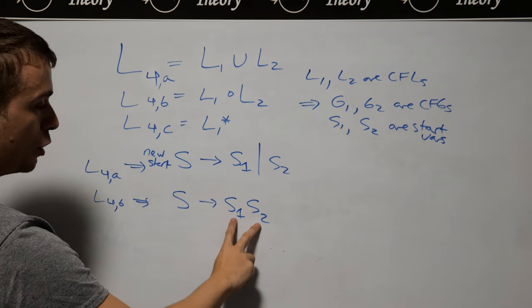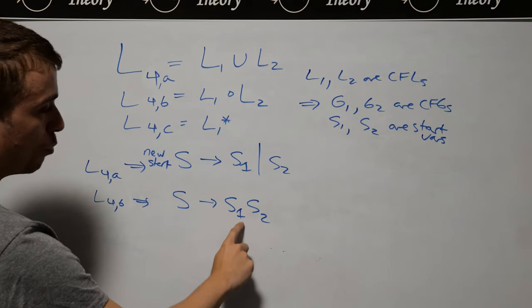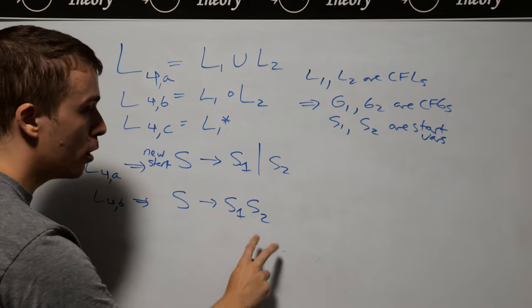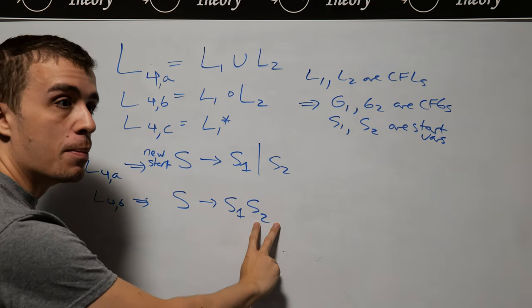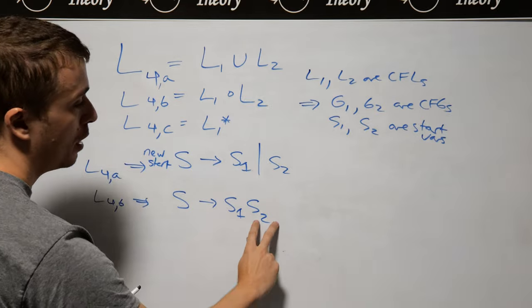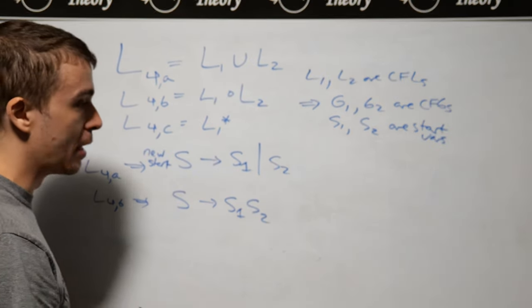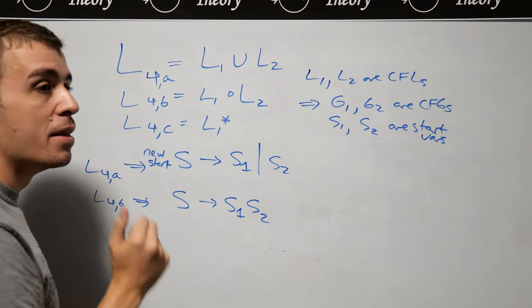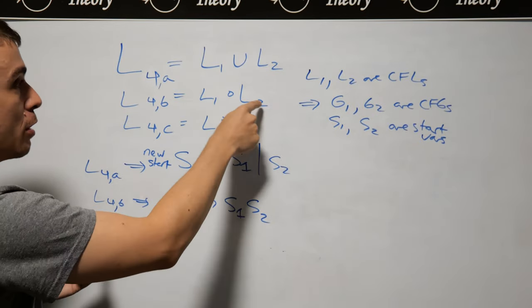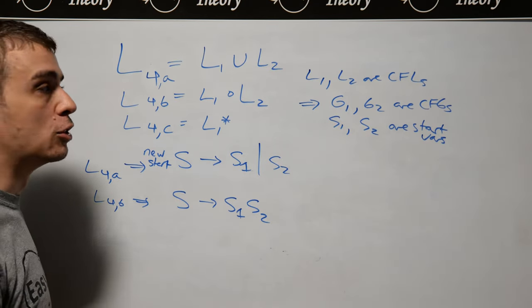Whereas here, what we're doing is making some string with S1, and we can't quit early because S2 is a variable, and we need to make a string of terminals. So S2 is going to make some string, potentially. And then that corresponds to generating a string in the original language.